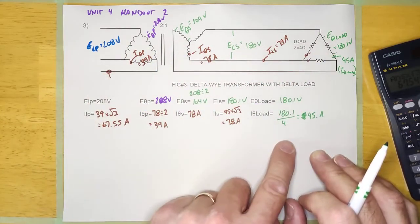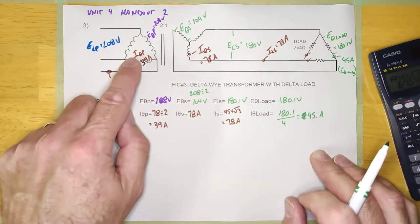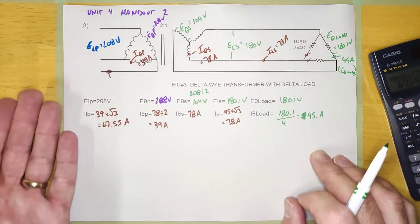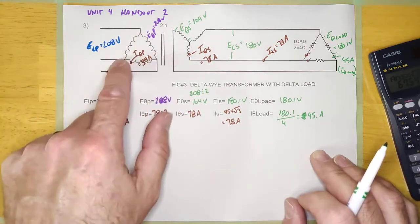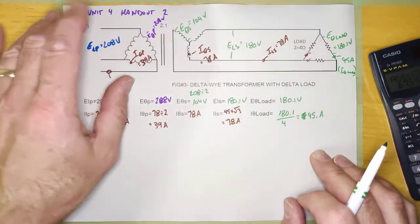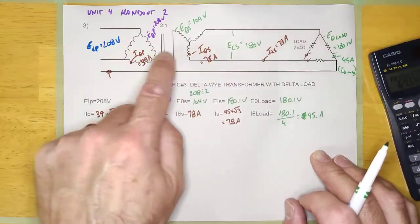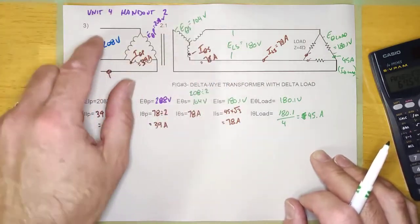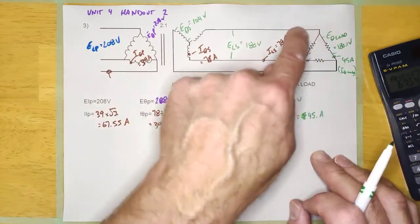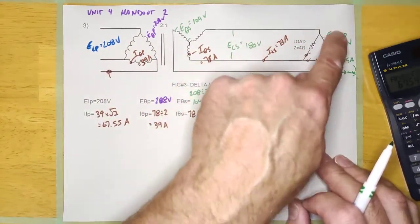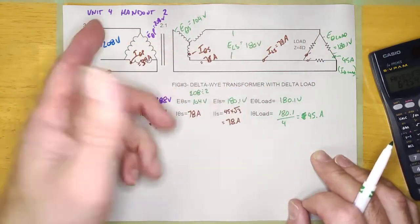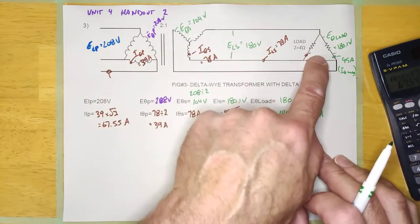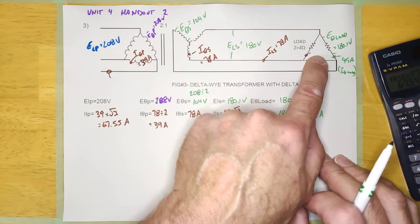You'll notice that the question doesn't ask for the VA, but you need to check it, because if you don't check it you won't know whether you've made a mistake or not. The VA of this entire circuit is being determined by the load. The transformer doesn't change the VA — it just changes the voltage and the current, but it does not change the power. The VA of the primary, the VA of the secondary, and the VA of the load are all going to be the same.